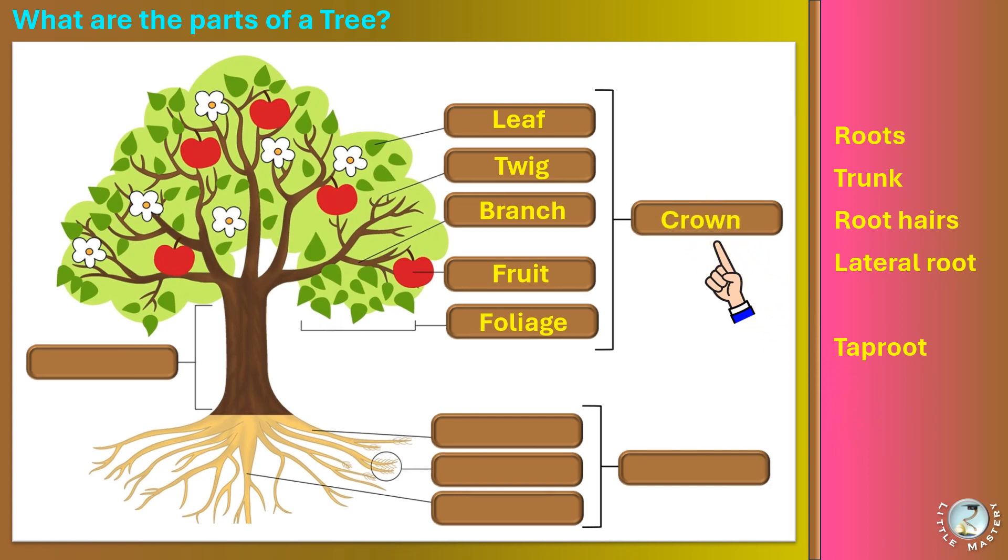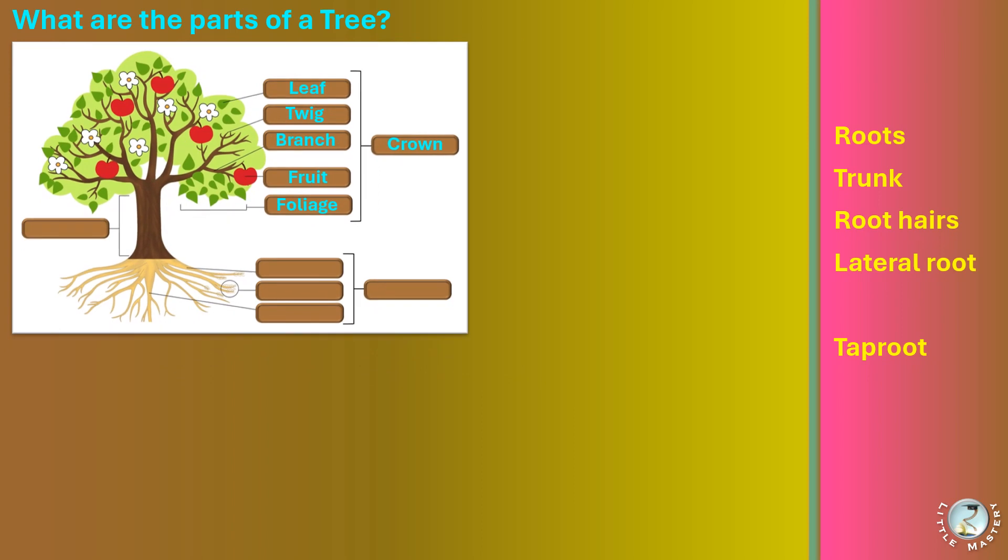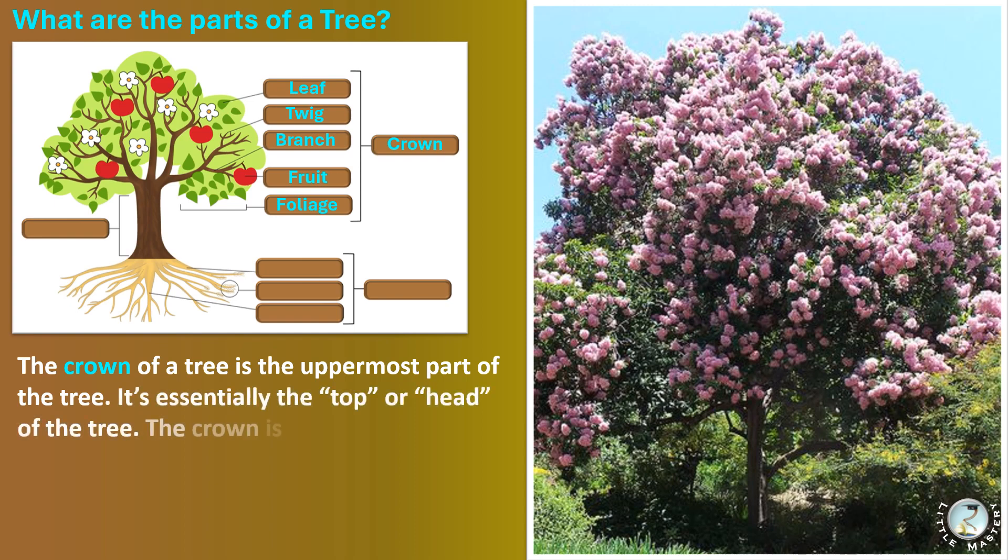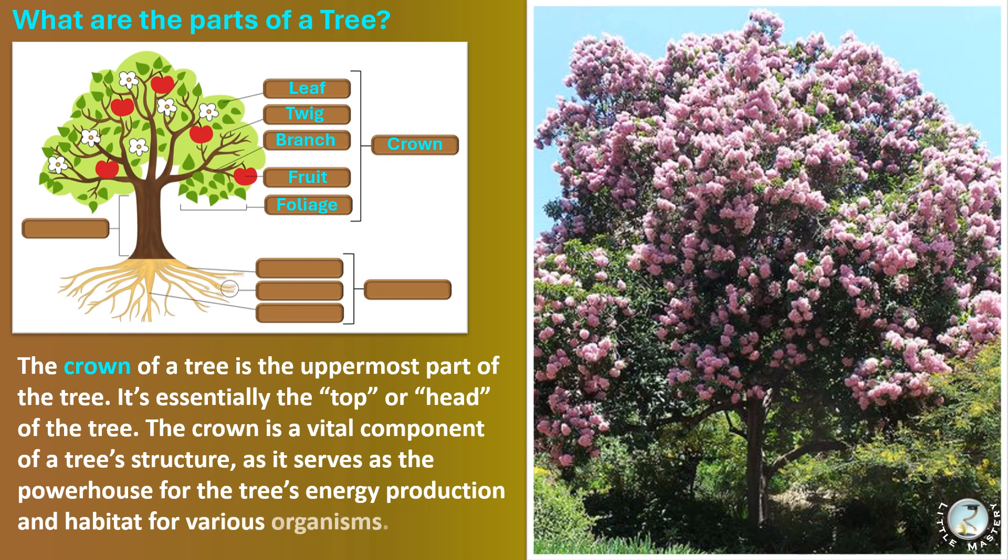The crown of a tree is the uppermost part of the tree. It's essentially the top or head of the tree. The crown is a vital component of a tree's structure, as it serves as the powerhouse for the tree's energy production and habitat for various organisms.